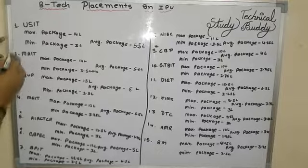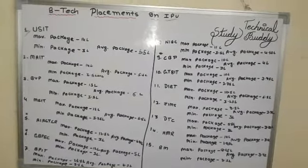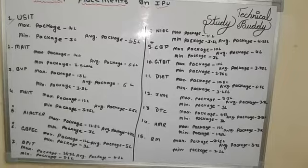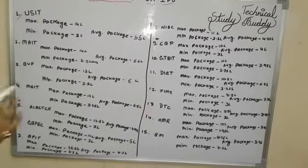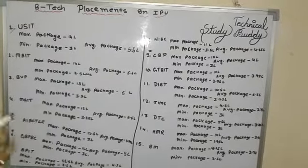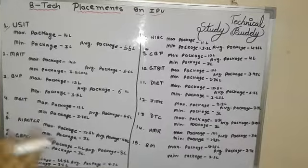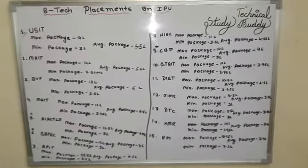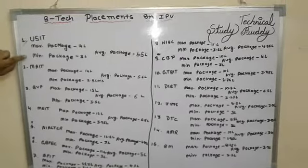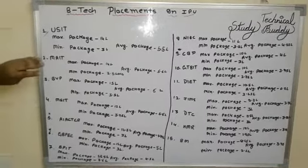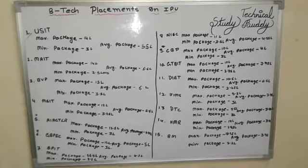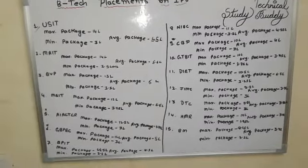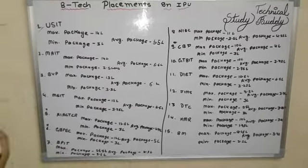Let's start. First is USIT, the main campus. Maximum package is 14 lakhs — but only 1 or 2 students get it, so don't think everyone gets it. The average package is 5.5 lakhs. We sum all packages and divide by total number of students. The minimum package is 3 lakhs, which tells us that startups are also allowed on campus.